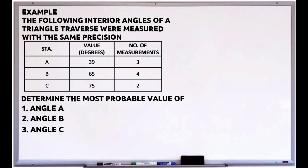We have different rules for weighted measurements when measuring distance and elevation. For this example, the rule is: the weight is inversely proportional to the number of repetitions or measurements when measuring angle.